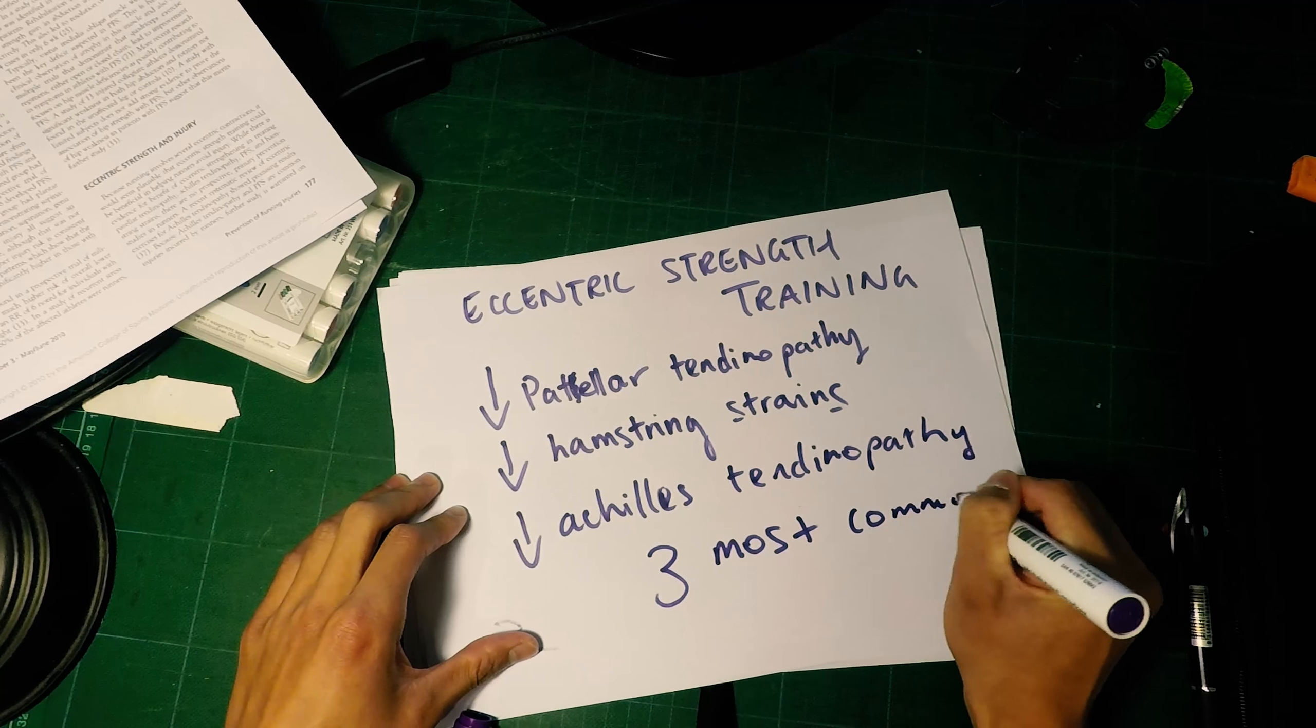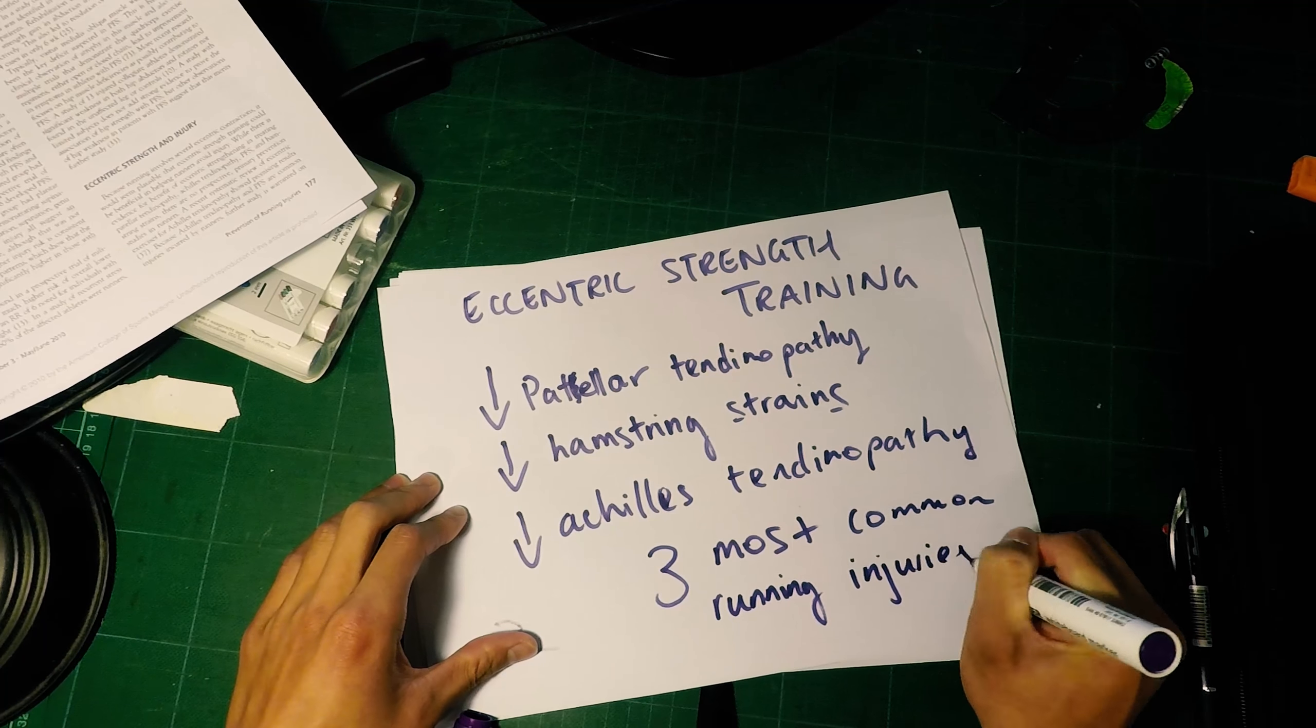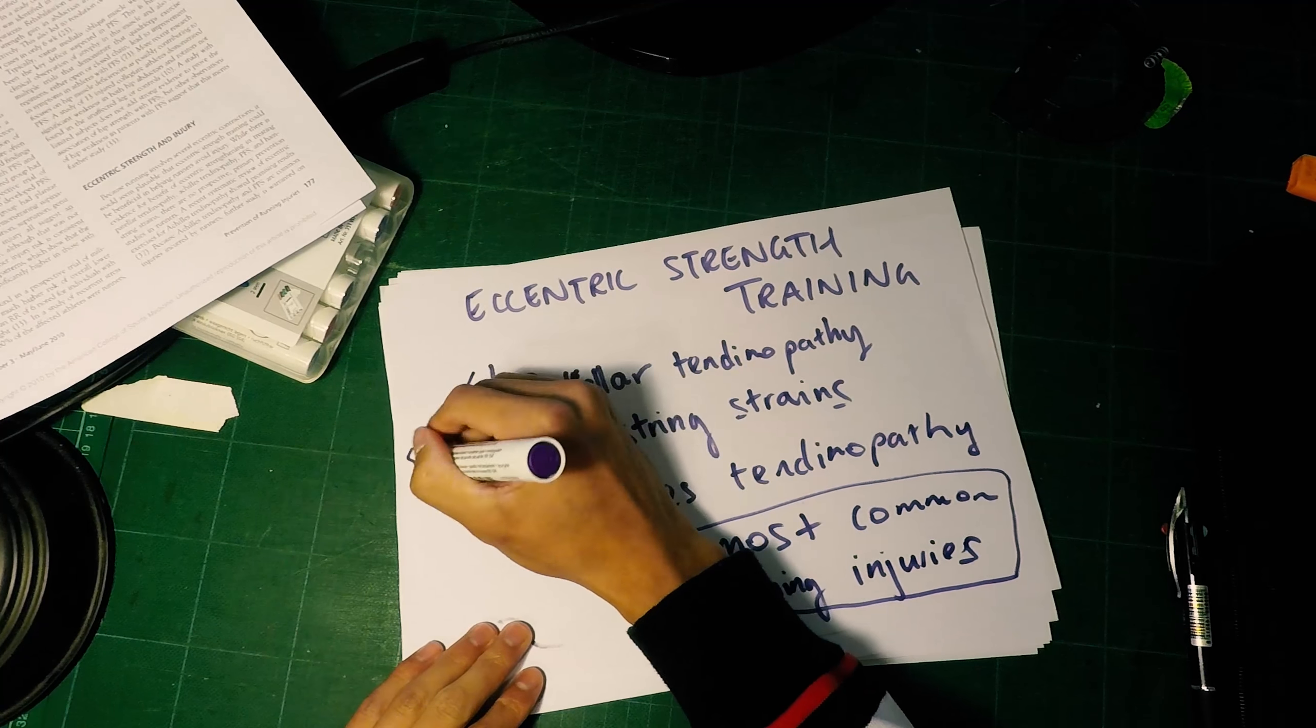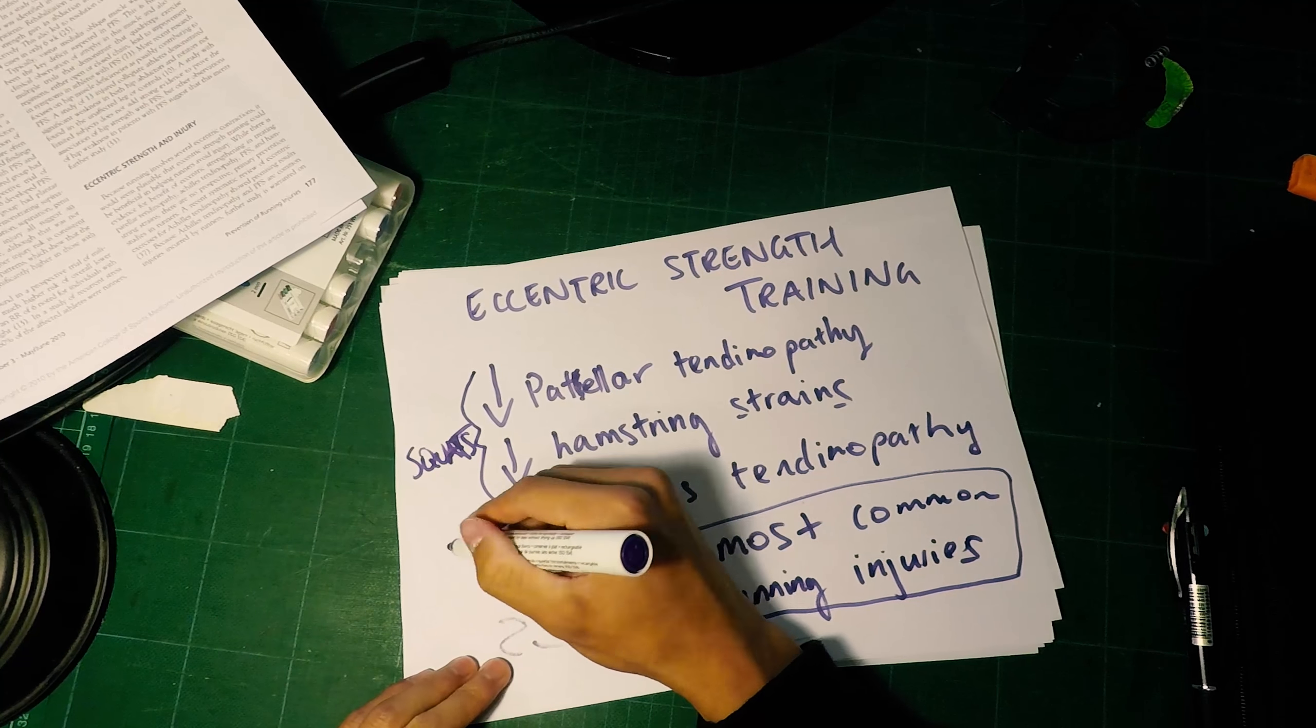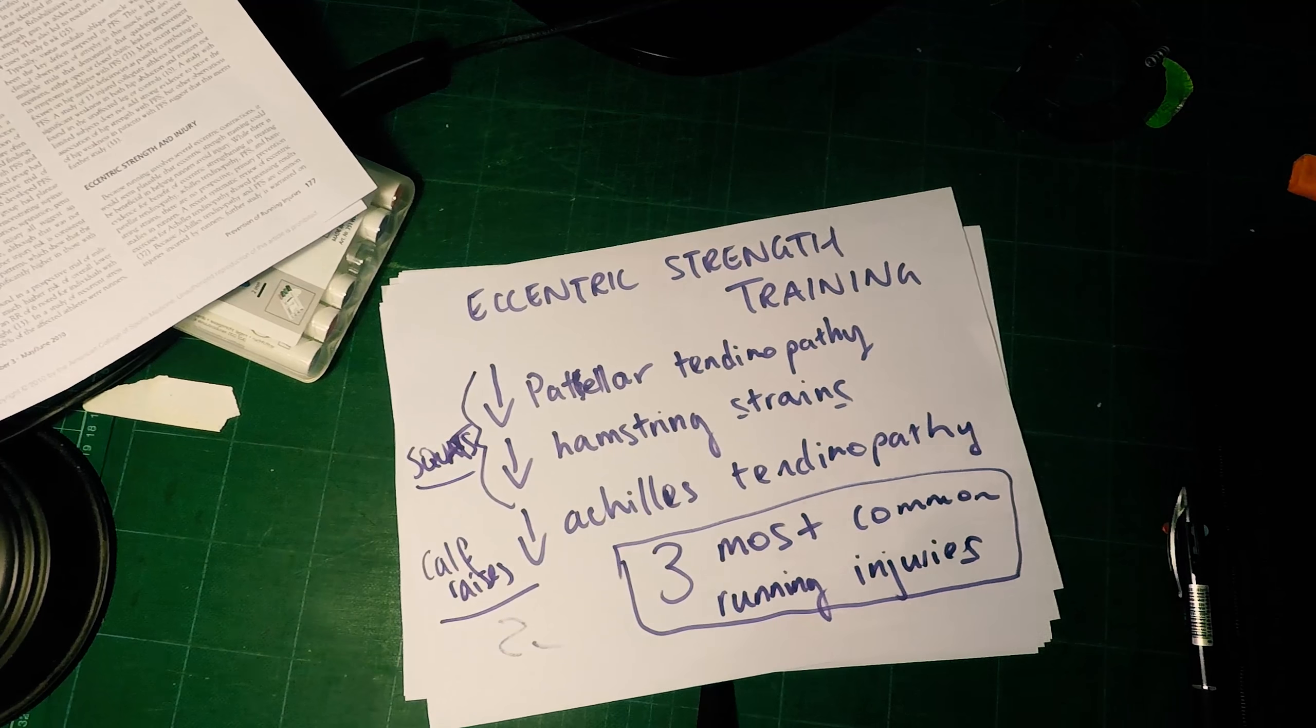How do you do eccentric strength training? Well, the first two can be done by squats and the last one by calf raises. So if you do squats and calf raises, you're already minimizing risk by a lot.